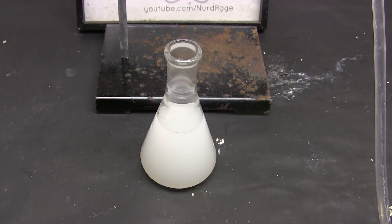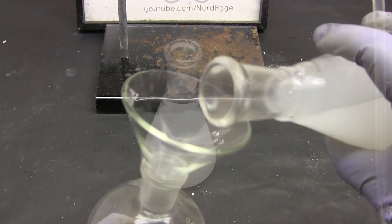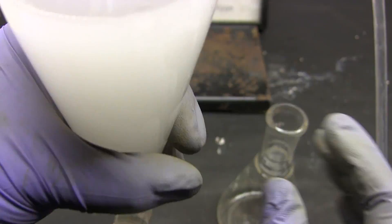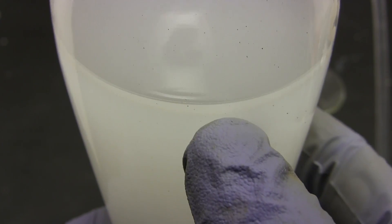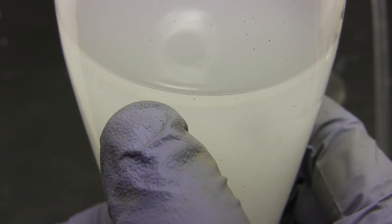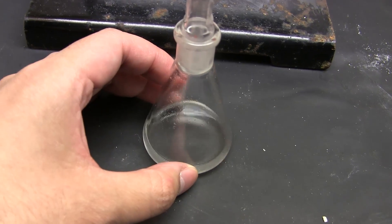So it floats on the aqueous layer like an oil. We can then use the separatory funnel to separate just the ethylpropionate layer. It's hard to see on camera but the layer is there. And here it is, our sample of ethylpropionate.